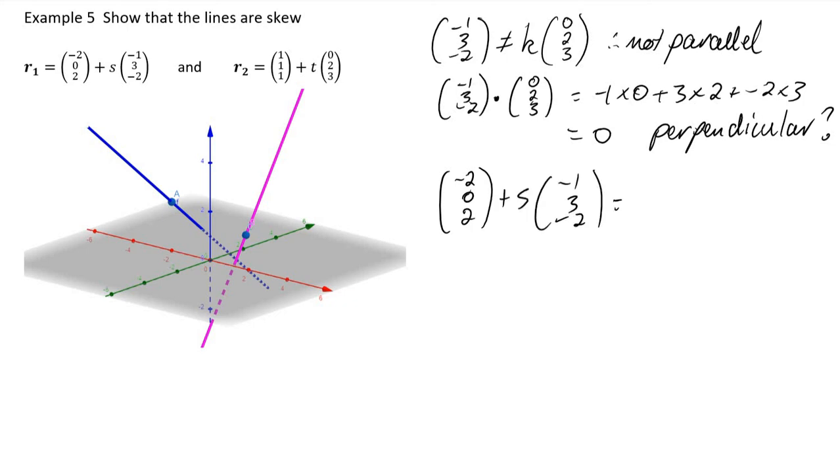We set the two vector equations equal to one another and get the equations for each component. Rearranging gives us that s is negative 3.